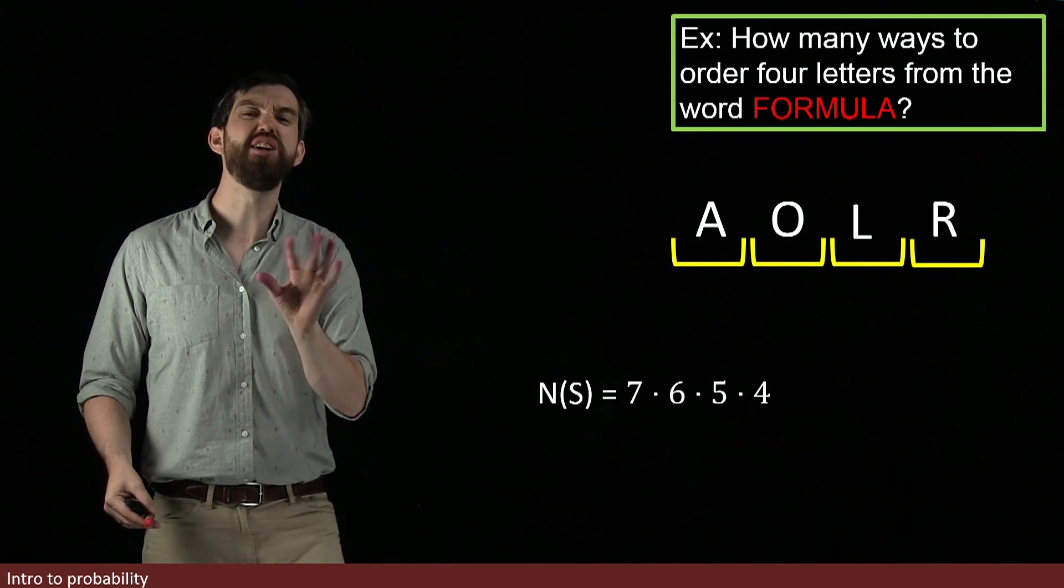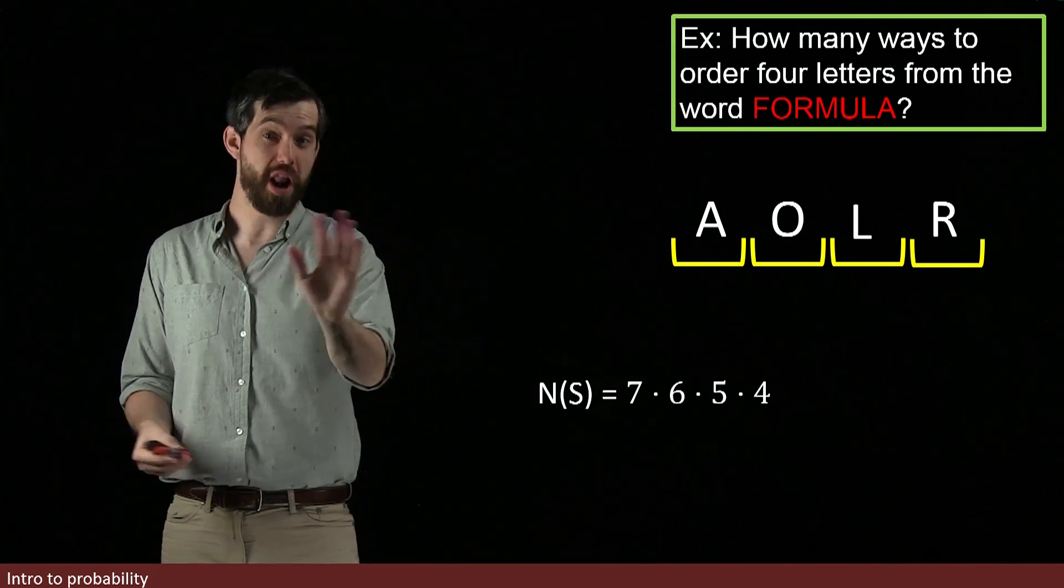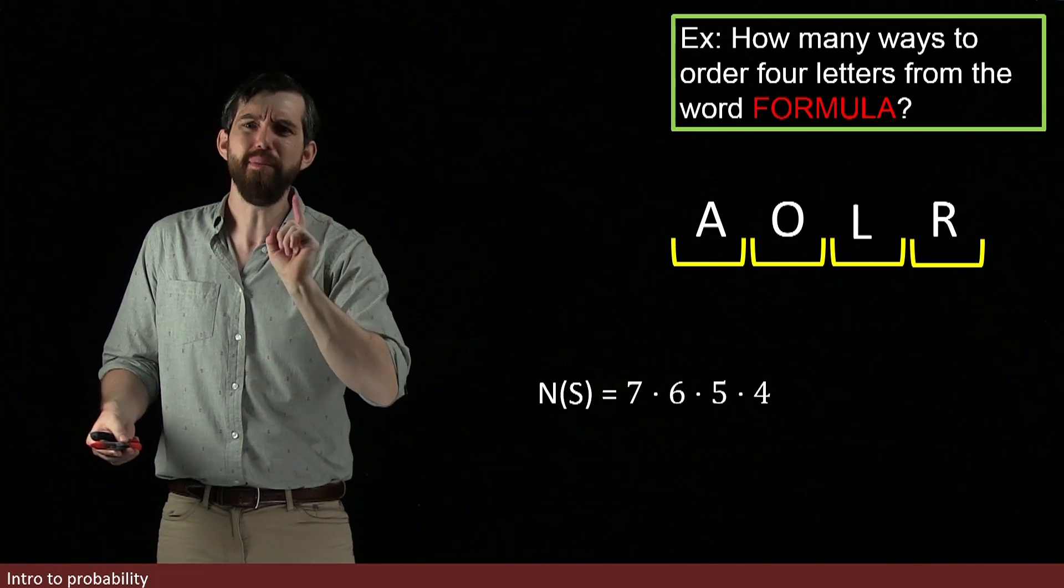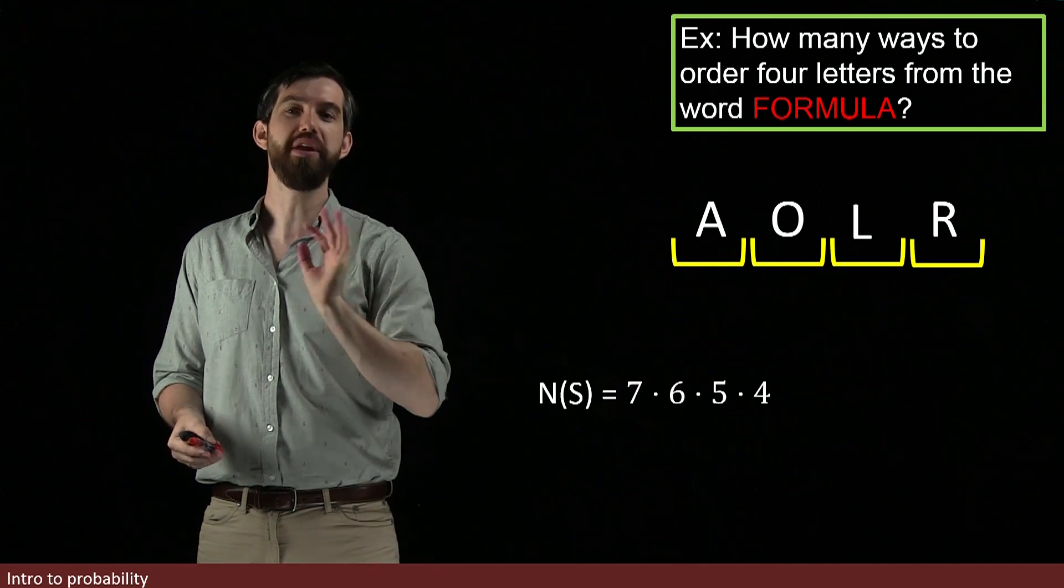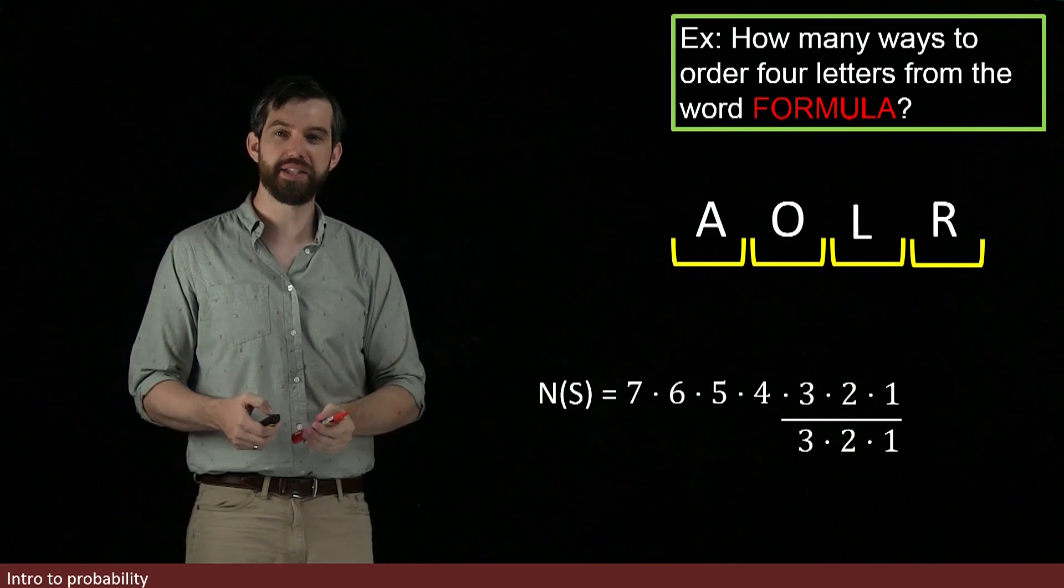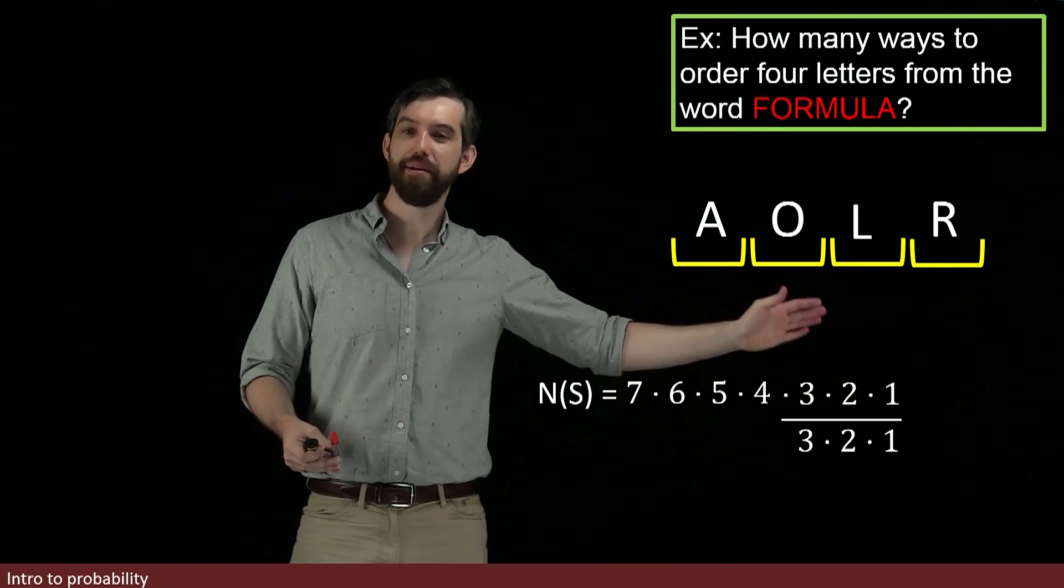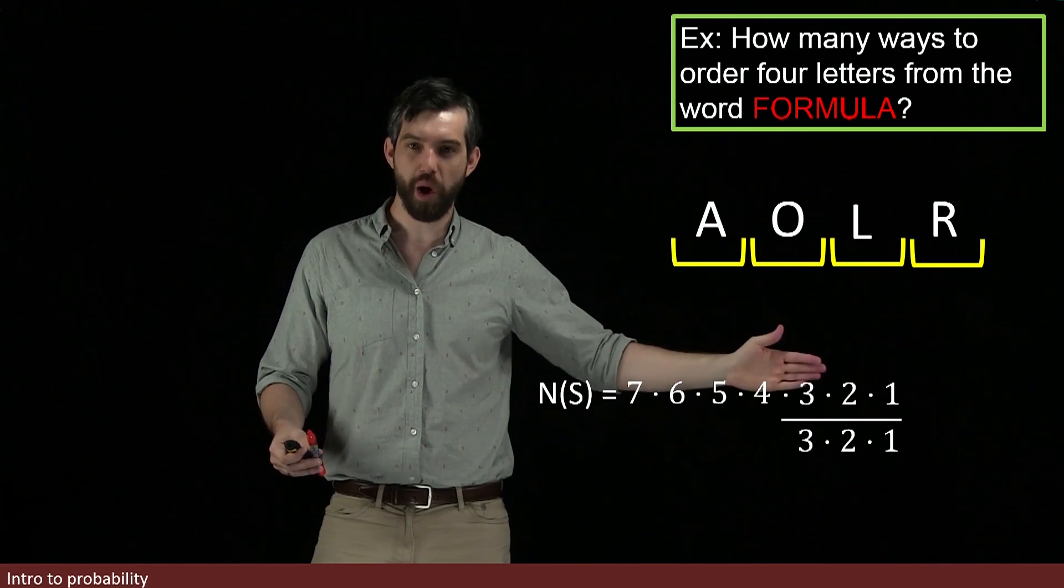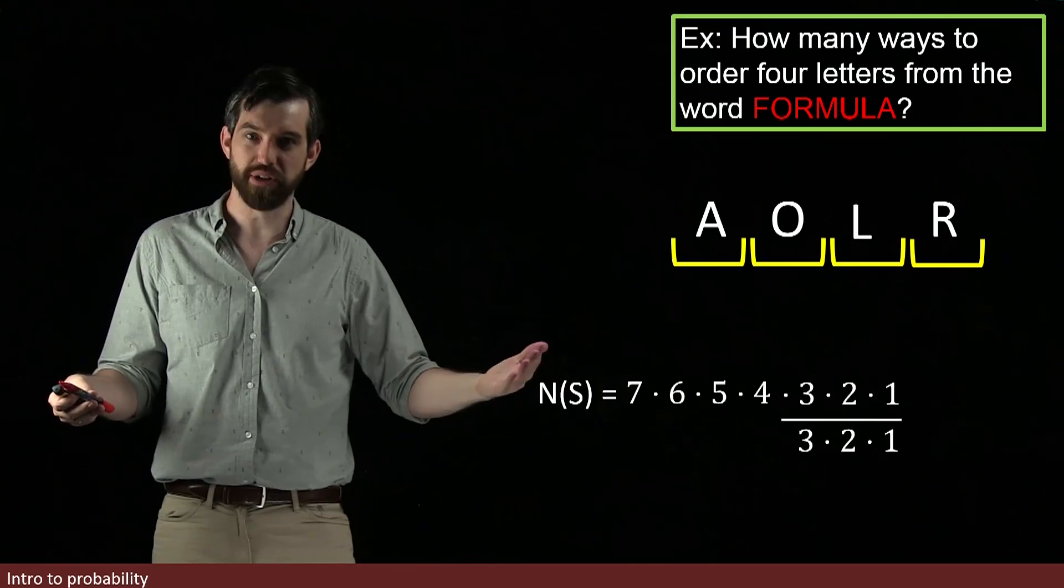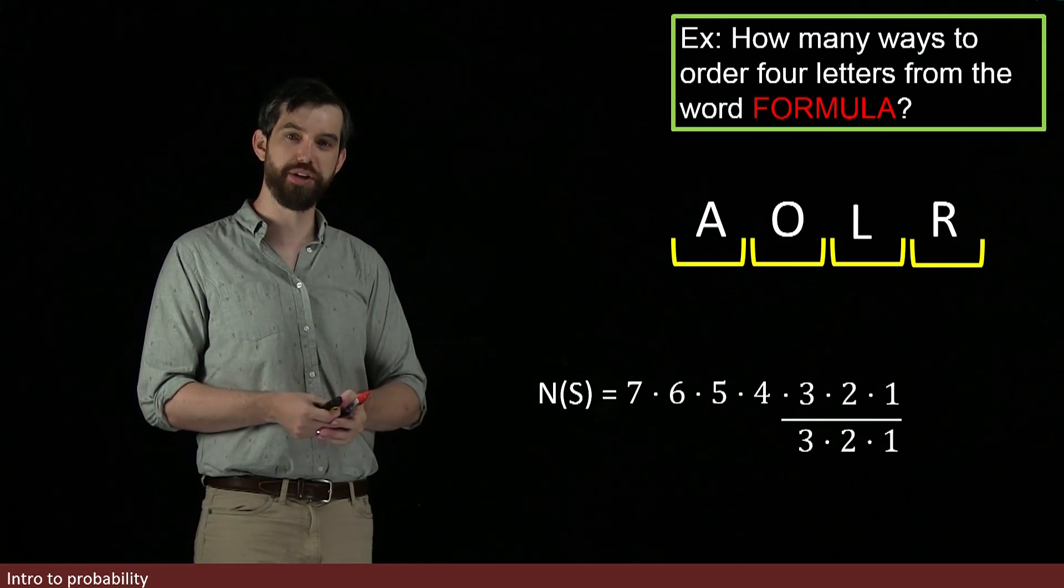Now I'm going to do a little algebraic trick. I'm going to multiply and divide by one. I'm allowed to do that, right? But I'm going to multiply and divide by a slightly weird form of one. It's going to be three times two times one divided by three times two times one. The three times two times one cancels, and so I am just multiplying by one. I haven't made any changes.